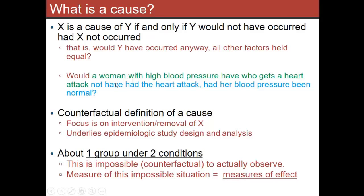Here's a real-life example: would someone with high blood pressure who gets a heart attack not have had the heart attack had their blood pressure been normal? If the answer is yes, that means blood pressure was a cause of their heart attack. This is the idea — if you could play reality twice on the same person, once with the exposure and once without, and something changes in the outcome, we say the exposure caused the outcome. It's the counterfactual definition of the cause — it's really about thinking about intervening or removing the exposure.